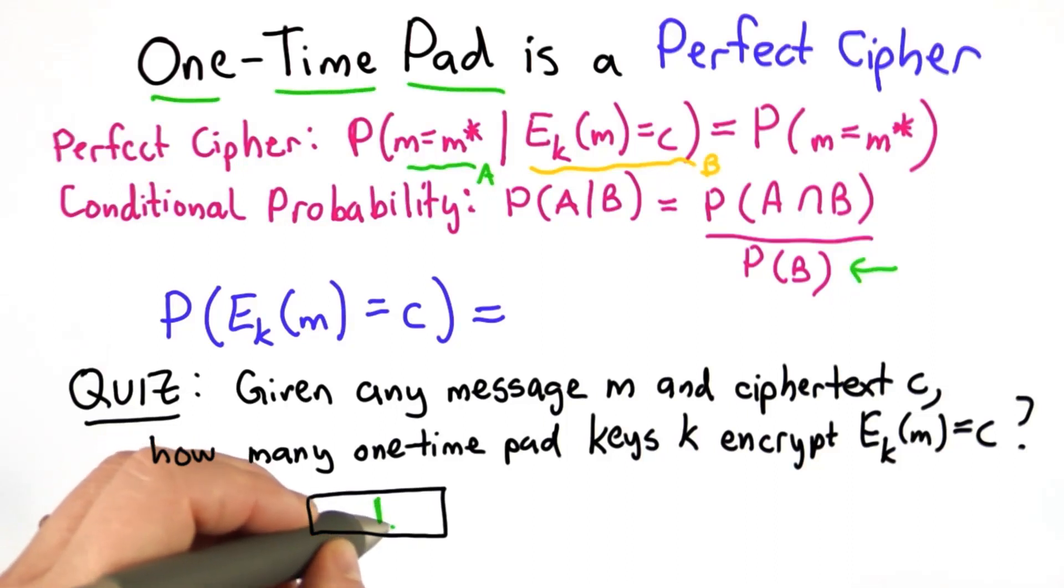The answer is there's always exactly one. For any message ciphertext pair, there's one key that maps that message to that ciphertext.